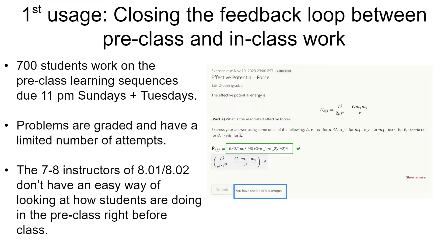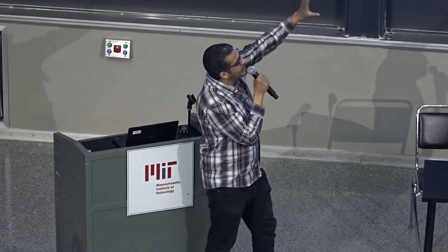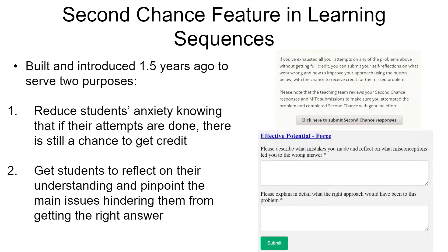To help bridge this gap, before the discussion of AI, we created something called the second chance feature in the learning sequences about a year and a half ago. After every problem in the learning sequences, there is a button students can click if they finished all their attempts and didn't get it right. This came from a lot of student feedback — some students have a lot of anxiety going through the learning sequences because they are graded. Students get anxious knowing they're losing points, cannot get it right, are learning on their own, and are running out of attempts, which hinders their learning.